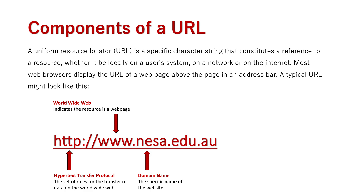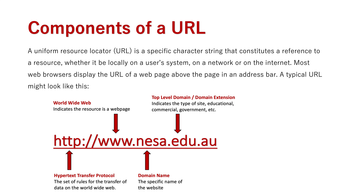The 'nesa' part is the domain name — that is the specific name of the website. All websites have different names and you have to set them up through a domain host and purchase specific domain names. Going on from there is the top-level domain, or domain extension, which indicates the type of site. In this case it is '.edu', indicating an educational website. There's also '.com' for commercial, '.gov' for government-based websites, '.net' for certain networks, and '.mil' for military.